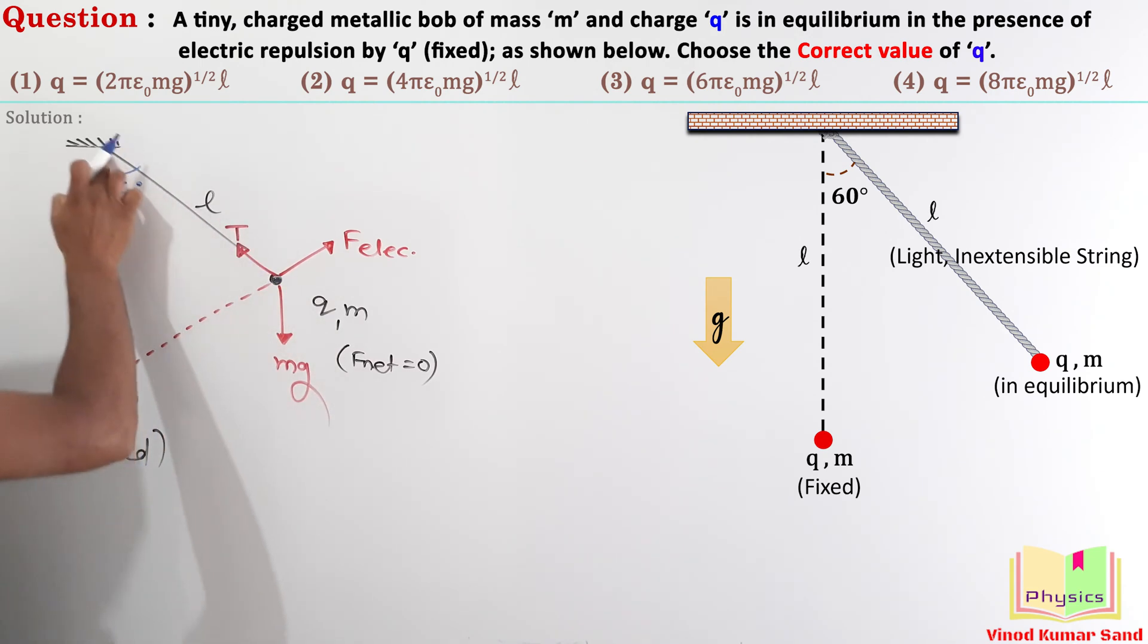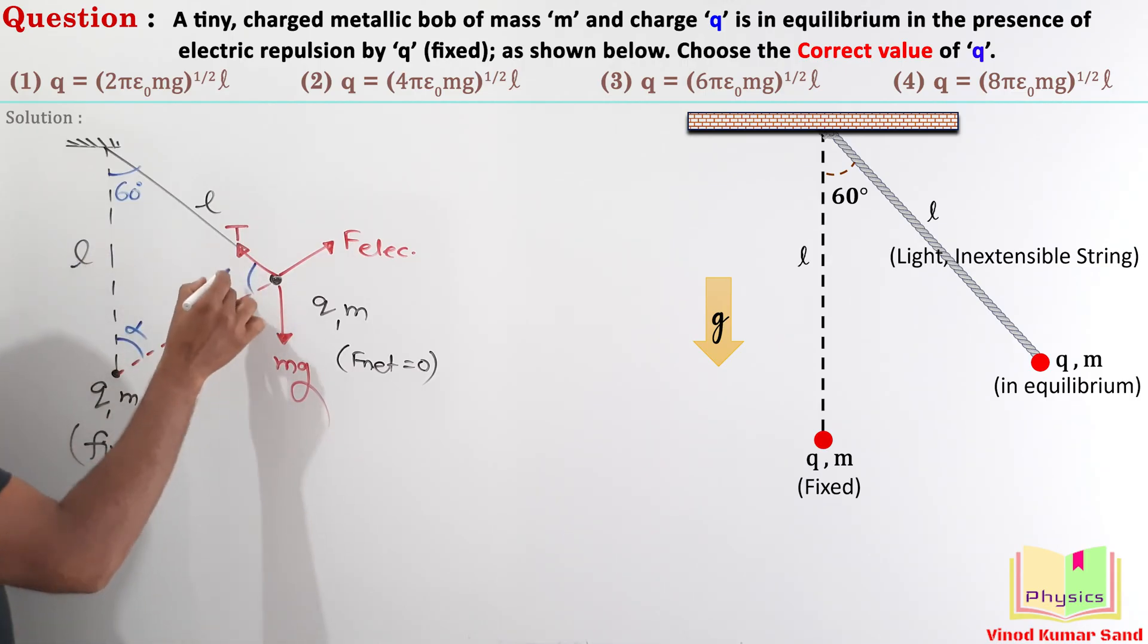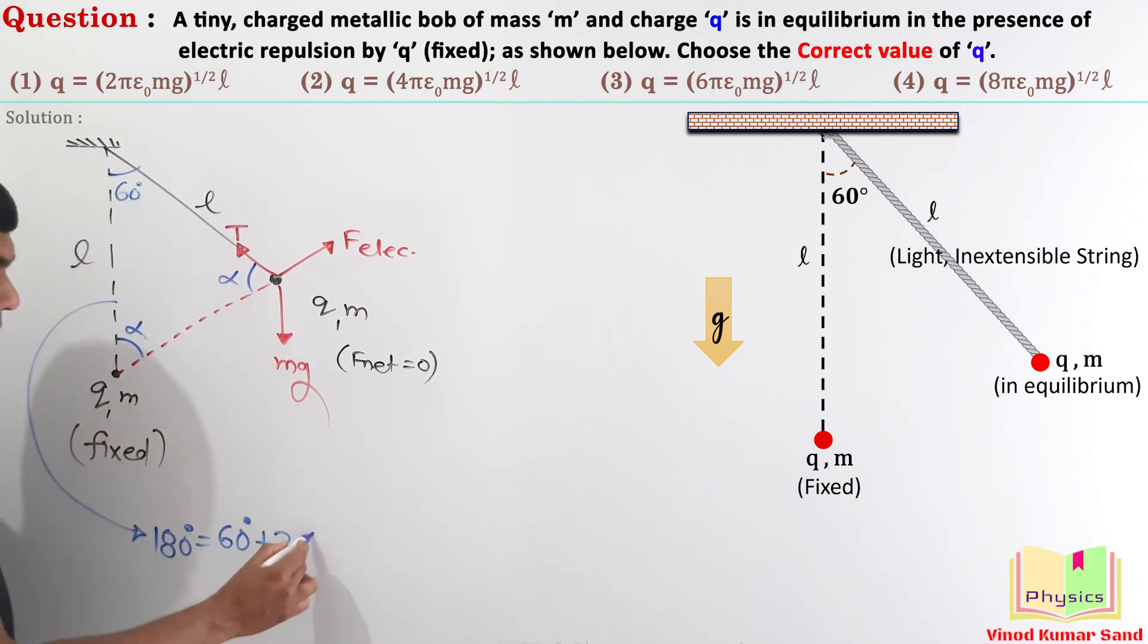In the triangle, this length is L. I am assuming the angle in front of this side length is alpha. Since this side length of the triangle is also L, then the angle here opposite to this side length should also be alpha. Using the property of the triangle, the sum of the interior angles is 180 degree. So, 180 degree should be equal to 60 degree plus 2 alpha. Here we get alpha is equal to 60 degree. It means this is an equilateral triangle. Hence, this length would also be equal to L.